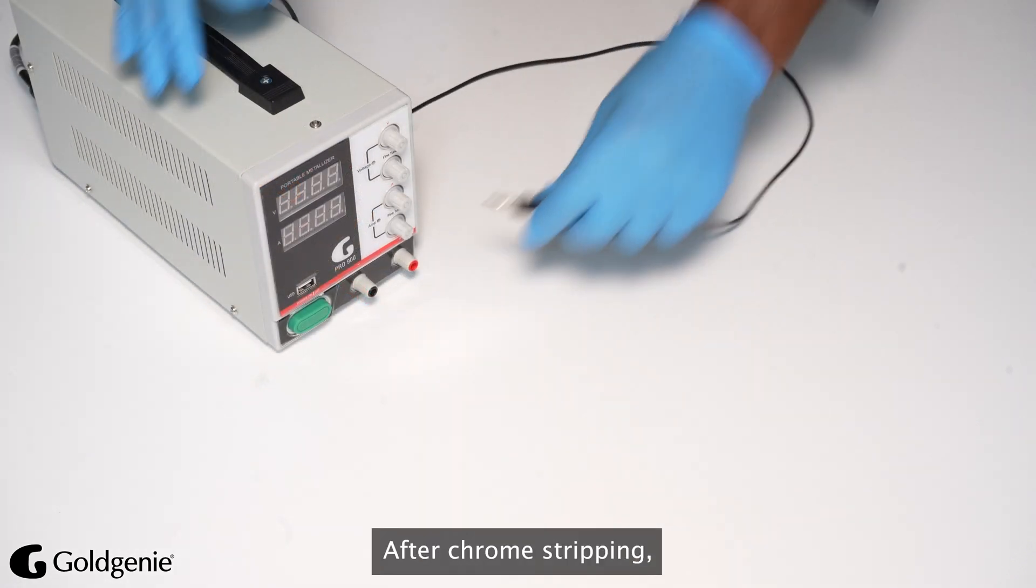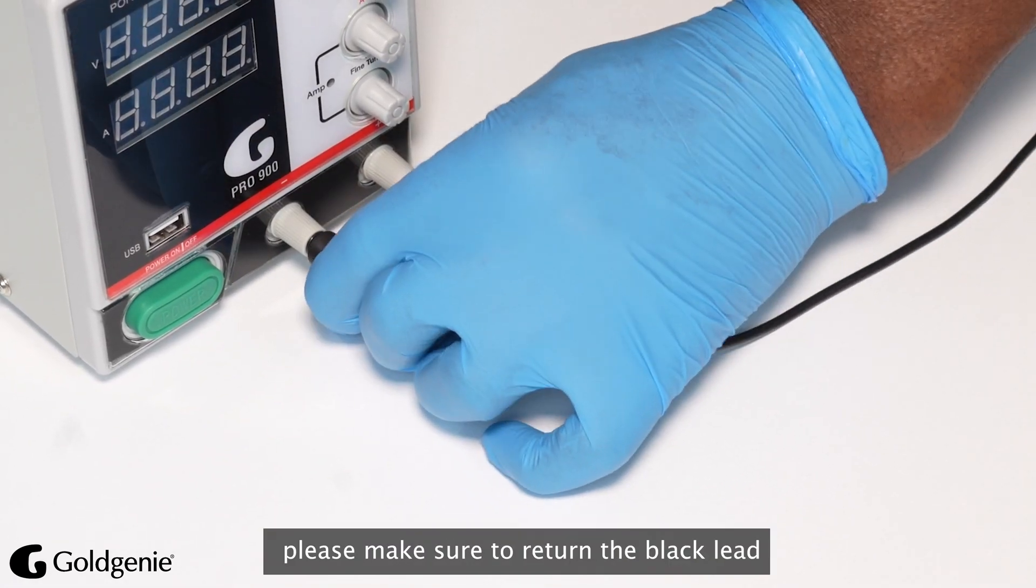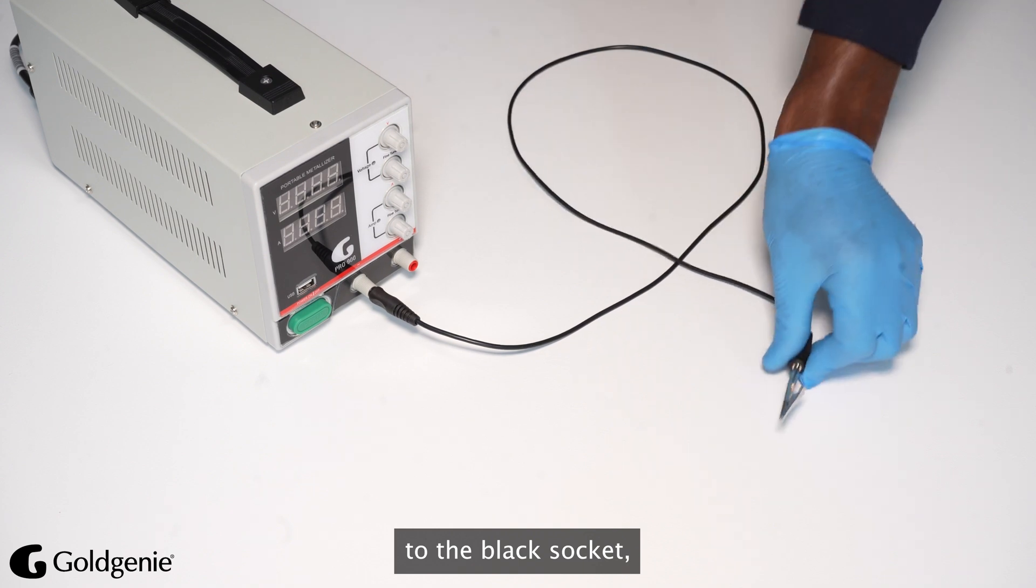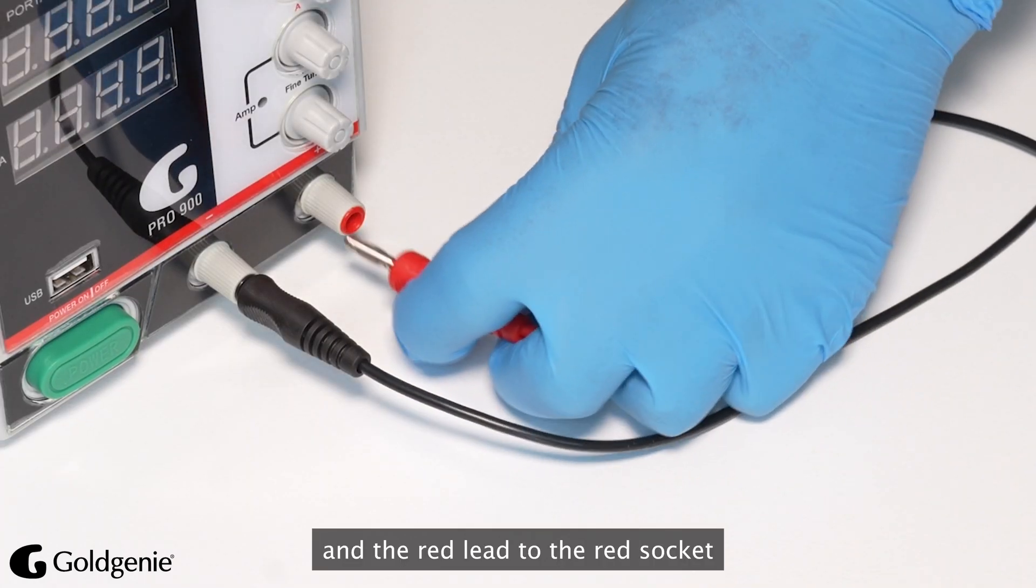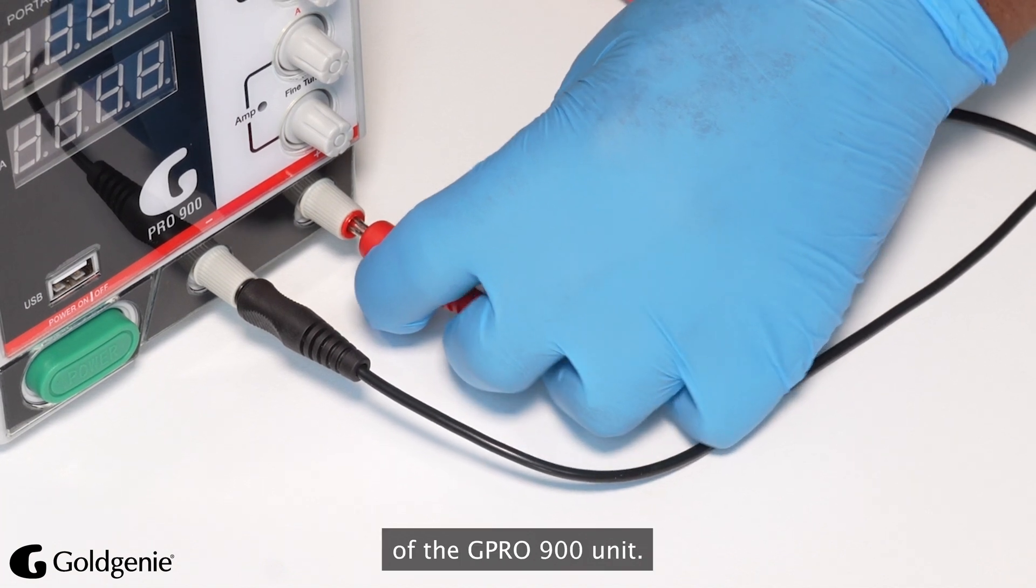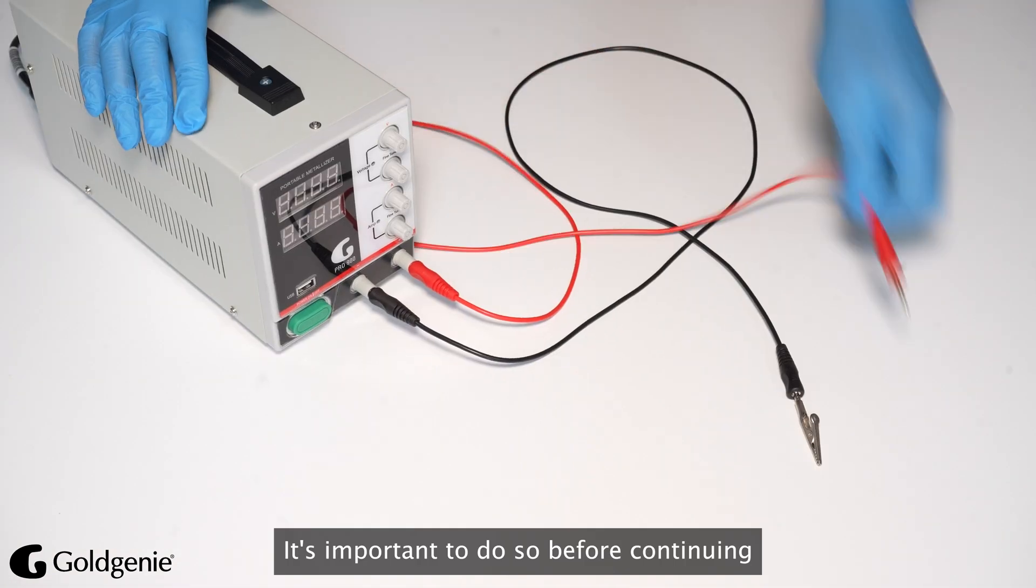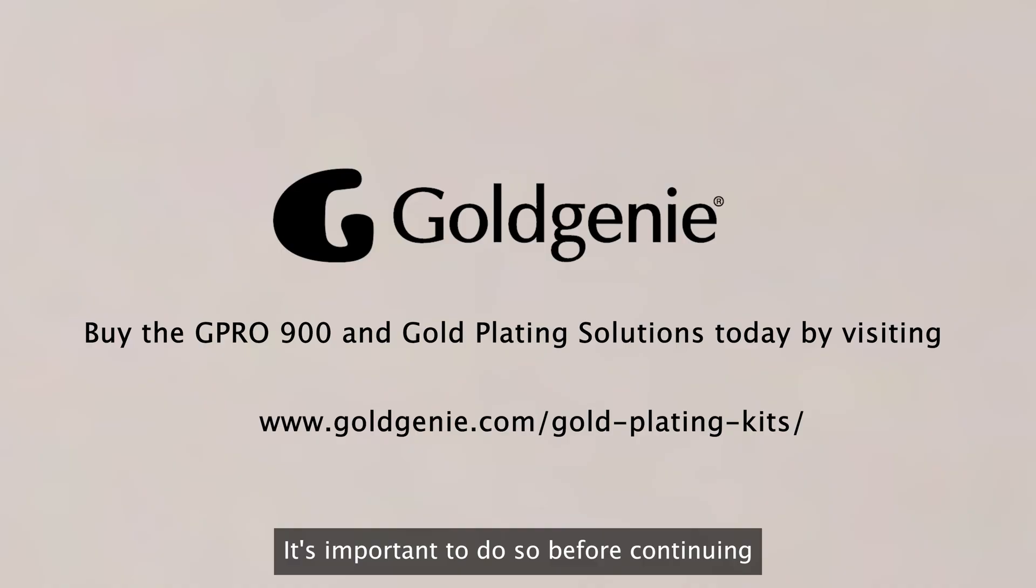Important: After chrome stripping, please make sure to return the black lead to the black socket and the red lead to the red socket of the G Pro 900 units. It's important to do so before continuing with the metal activating and plating steps. Thanks for joining us.